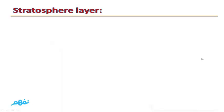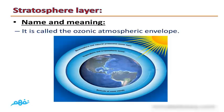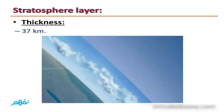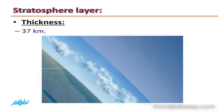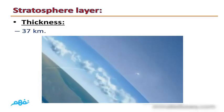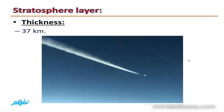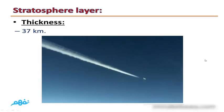The second layer is the Stratosphere layer. The Stratosphere is also called the Ozonic Atmospheric Envelope, because it contains the ozone layer. Its thickness is 37 km.